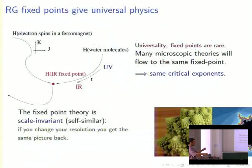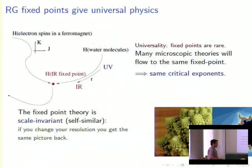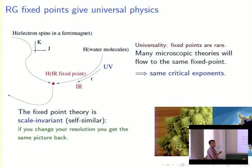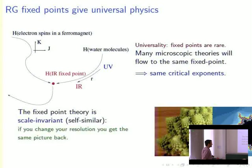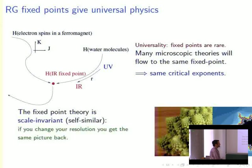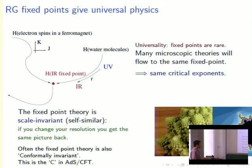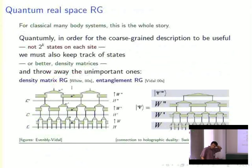An important outcome of this point of view is that this flow, like many dynamical systems, will have fixed points. The idea that fixed points are rare explains universality and critical exponents — these are properties of the fixed point, and many different microscopic systems end up at the same fixed point. The fixed point theory is self-similar: under coarse graining you get back the same Hamiltonian, so it's scale invariant. It looks like a beautiful broccoli flower. Often the fixed point theory is also conformally invariant.